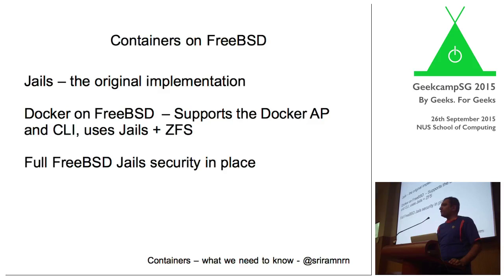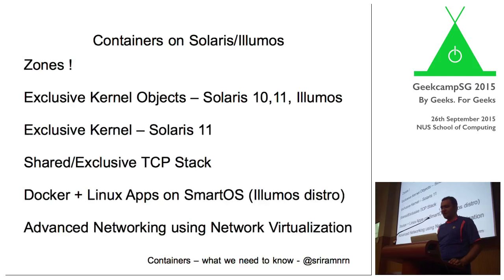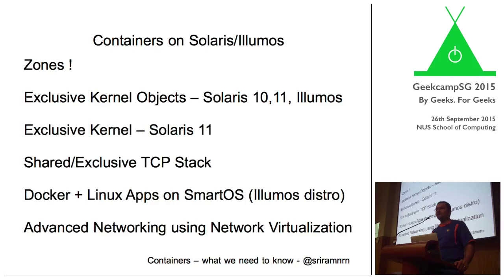FreeBSD was one of the first with jails. Then you have Sun Solaris, which is now Oracle Solaris. You have Illumos, which is a fork of the OpenSolaris code base. I was one of the devs on one of the distros which became Solaris 11. And these have had containers for a lot many years. I'll give you a small showcase on zones as part of our demos — we'll compare regular containers on Linux versus zones.